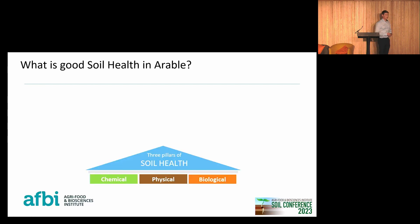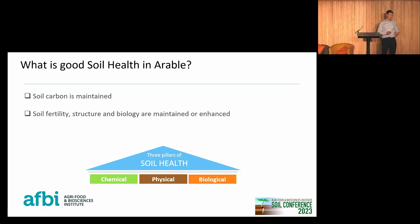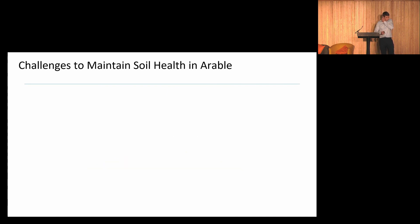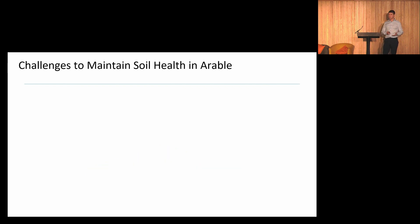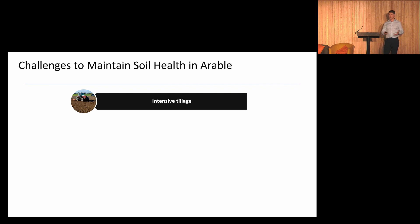The arable industry also plays a key role in providing bedding material — there's considerable straw imported from Ireland and mainland Great Britain, again reducing those miles. Cropping and arable also provide landscape-scale diversity which grassland can't. So what is good soil health in arable? It means soil carbon is maintained, soil fertility, structure and biology are maintained or enhanced, and it means increased resilience with better yield stability.